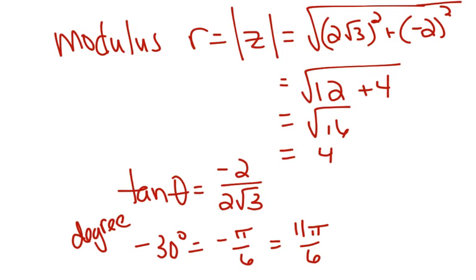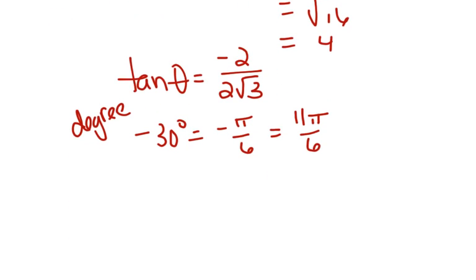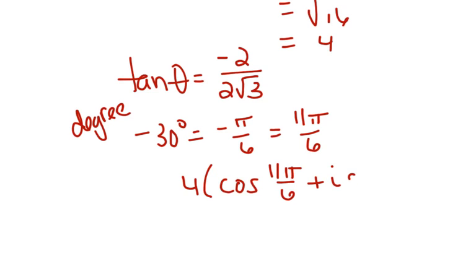Now I know r and I know theta, so I can write the complex number as 4 cosine of 11 pi over 6 plus i sine of 11 pi over 6.